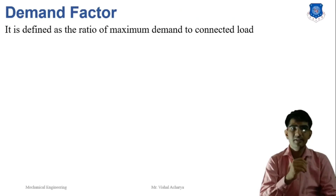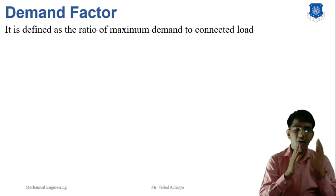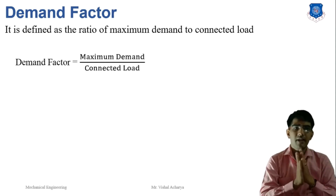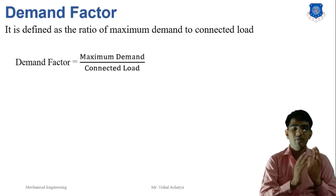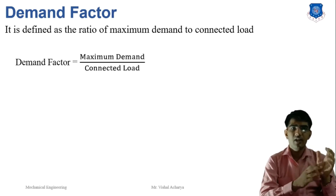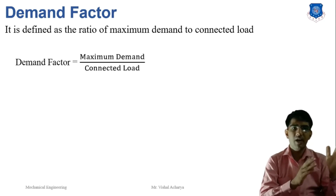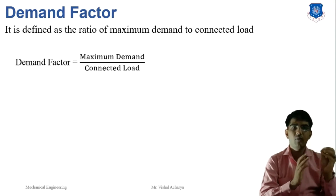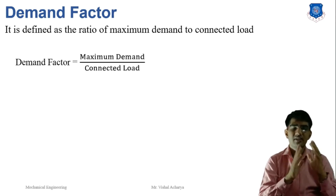Next is the demand factor. Demand factor is the ratio of the maximum demand to the connected load. For example, if maximum demand is 500 and connected load is 1745, then the demand factor is 500 divided by 1745. Demand factor is always less than 1 because maximum demand is always less than the connected load.